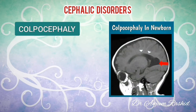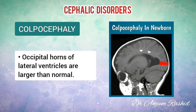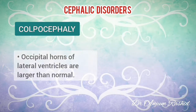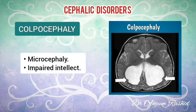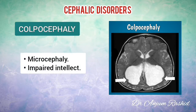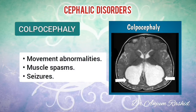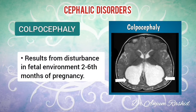The second type is colpocephaly. The occipital horns are the posterior or rear portion of the lateral ventricles, which are the cavities of the brain. In colpocephaly, a congenital brain abnormality, the occipital horns are larger than normal because white matter in the posterior cerebrum has failed to develop or thicken. It is characterized by microcephaly, which is an abnormally small head, and impaired intellect. Other features may include movement abnormalities, muscle spasms, and seizures. Colpocephaly results from some kind of disturbance in the fetal environment that occurs between the second and sixth months of pregnancy.